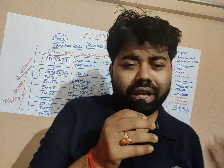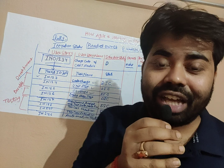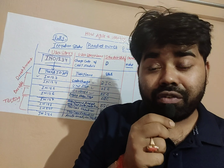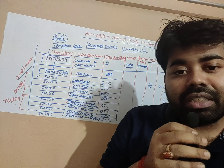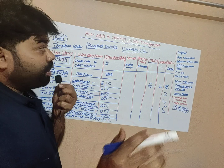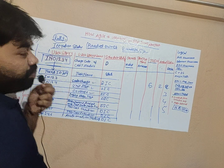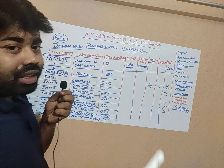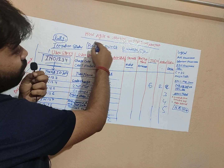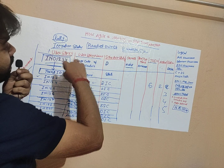Many people get confused about Agile, but today I will explain how Agile works in real time. I made a complete diagram so you can explain it if someone asks. Every company has a test management tool — I am using Rally as an example, but you can use Jira as well. The processes are the same; some labels may differ.